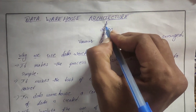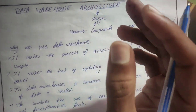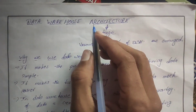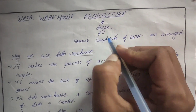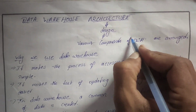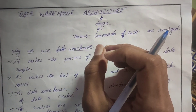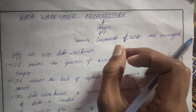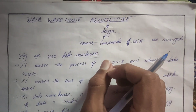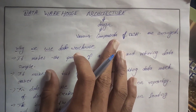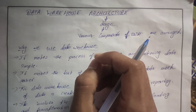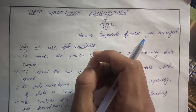Architecture means an art or design to design something. Data warehouse architecture means to arrange the various components of a data warehouse. For arranging data in a particular order in a data warehouse, we call it data warehouse architecture.